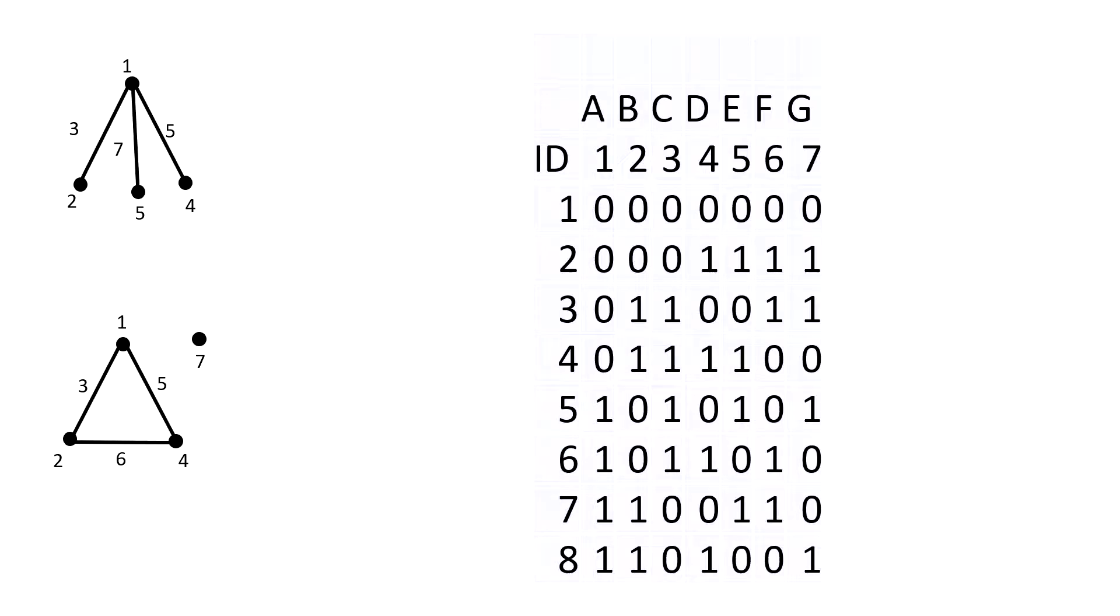Taguchi linear graph in design of experiments: what is it and how to use it? A linear graph is used to visualize the interaction between factors. This is the design for L8 2 to the power 7, which means seven factors with two levels each in an orthogonal array.